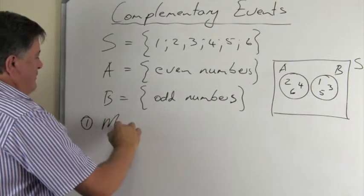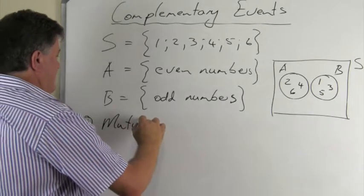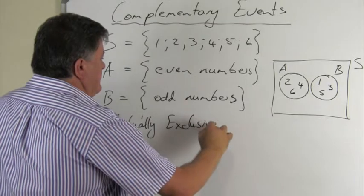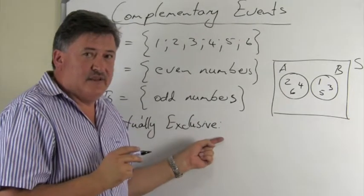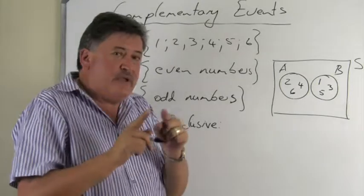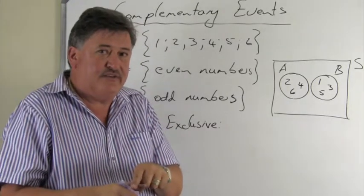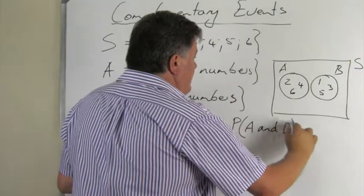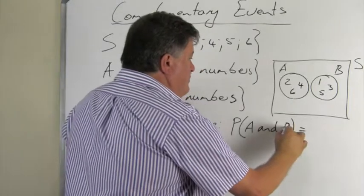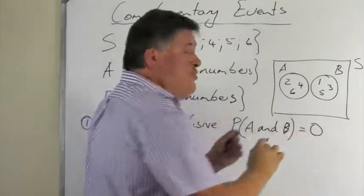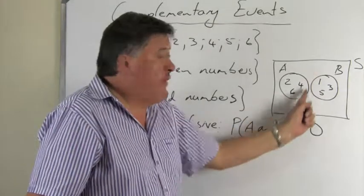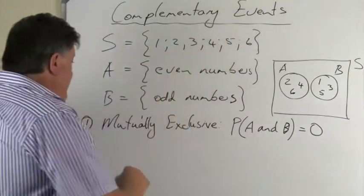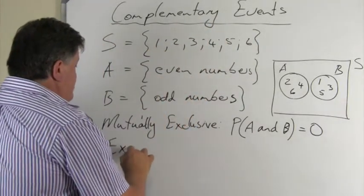Now we get to the definition: when will two events be complementary? First of all, they must be mutually exclusive. Think about what was special about mutually exclusive events — the probability of A and B is equal to zero, because there is no overlap.